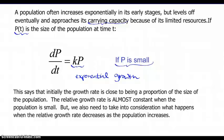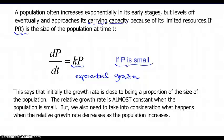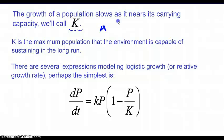We also need to take into consideration what happens when the relative growth rate decreases as the population increases. The growth of the population slows as it nears its carrying capacity. We'll call that carrying capacity capital K — it's what we're most likely to see on the AP exam, though I've also seen it referred to as capital M. Capital K is the maximum population that the environment and its resources are capable of sustaining in the long run.